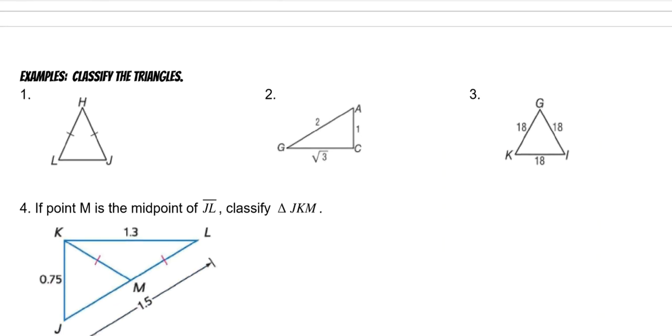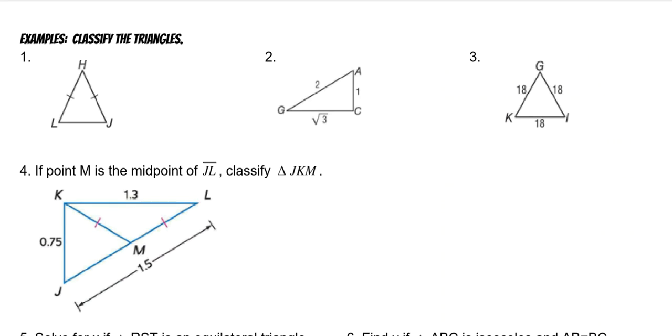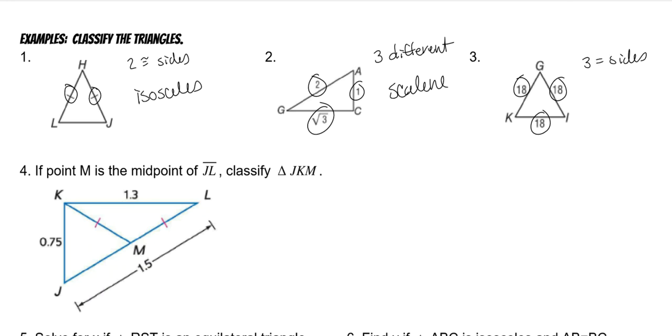Examples. We need to classify these triangles. Because this one has two congruent sides, it's an isosceles. Because this one has three different sides, it's a scalene. And this one has three equal sides, so it's an equilateral.